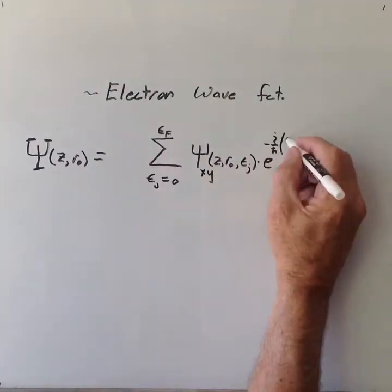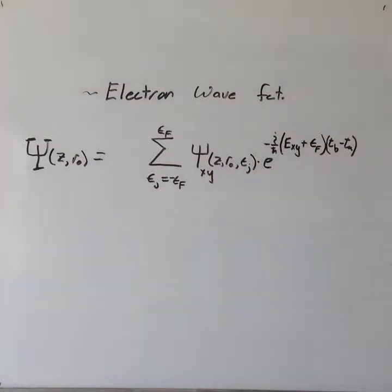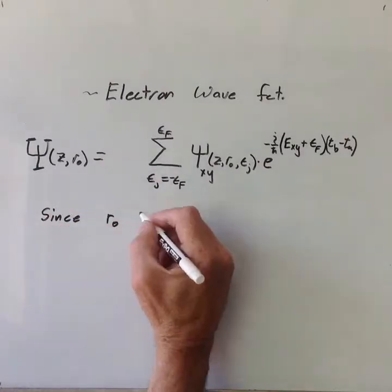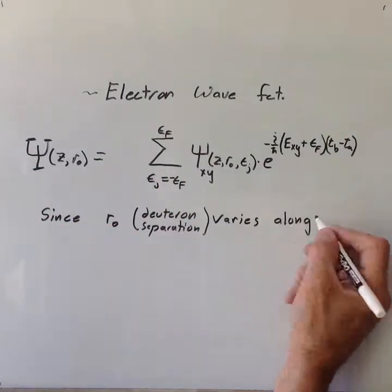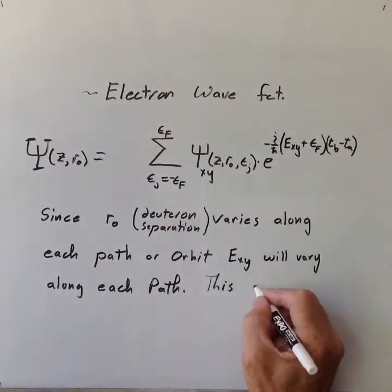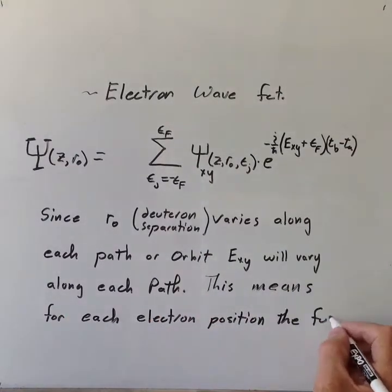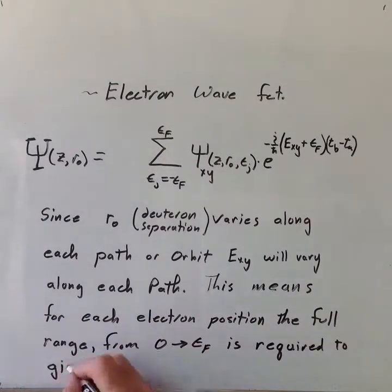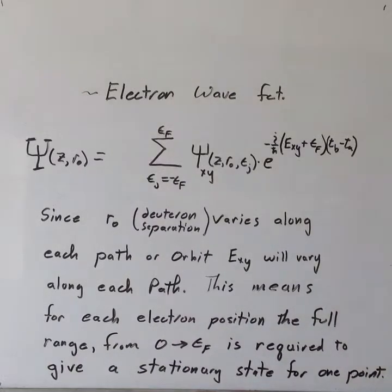We have now shown that with a high enough Fermi energy, we can create a stationary state along the z-axis using amplitudes for all the energy states in the conduction band. But since the deuteron separation will vary along each deuteron orbital path, the time-dependent phase factor for an individual point along z will require the full range of conduction band energies to produce a stationary state at even one point.